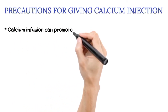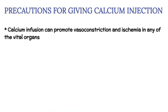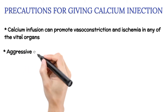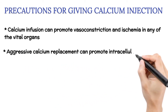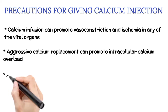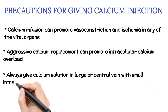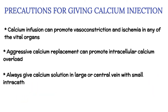Precautions: Calcium infusion can promote vasoconstriction and ischemia in vital organs, and is seen especially in patients with low cardiac output. Aggressive calcium replacement can promote intracellular calcium overload, which can produce lethal cell injury, particularly in patients in circulatory shock — so avoid it. Always give calcium solution in a large or central vein with a small intracath, due to the hyperosmolarity of calcium solution.